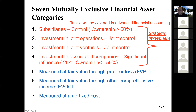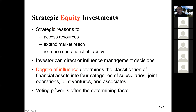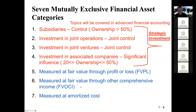In this chapter, for the purpose of this course, we are only focusing on three categories: FVPL — measured at fair value through profit or loss; FVOCI — measured at fair value through other comprehensive income; and number seven, measured at amortized cost. Those are the seven categories, and we are going to focus on the last three.